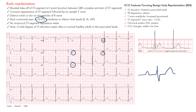We're looking for a concave ST segment. The ST segment runs from the J point — the junction point at the terminal portion of the QRS complex — to the beginning of the T wave. The elevation is concave in shape, going up like a curve, not flat or downsloping.